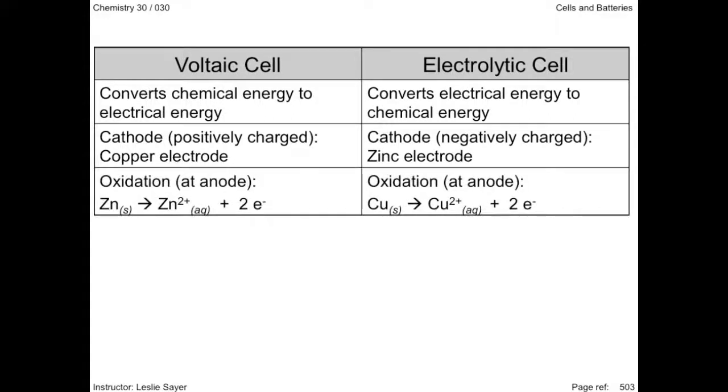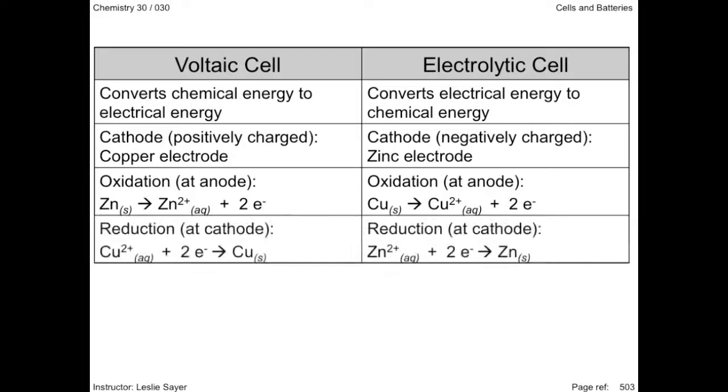The oxidation half-reactions at the anodes show electrons being lost from zinc in the voltaic cell and copper in the electrolytic cell. Likewise, the reduction half-reactions at the cathode, copper ions to copper metal in the voltaic cell, and zinc ions to zinc metal in the electrolytic cell.